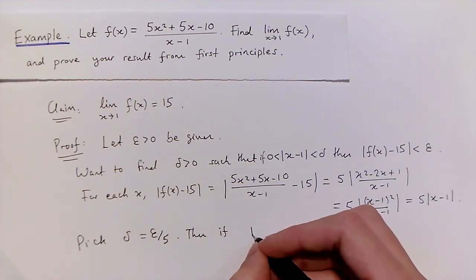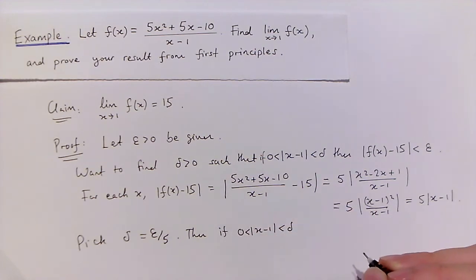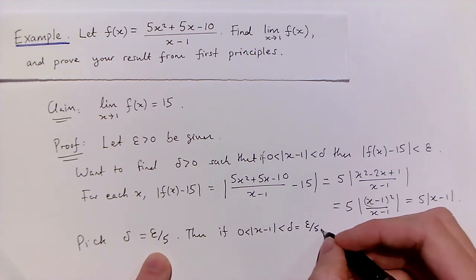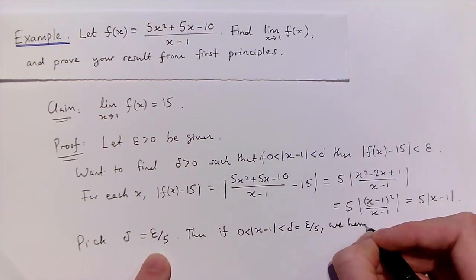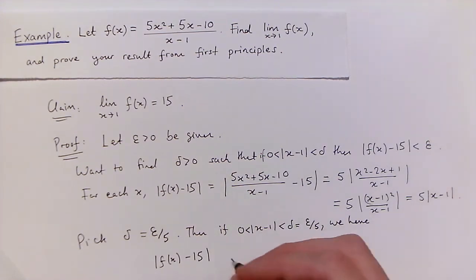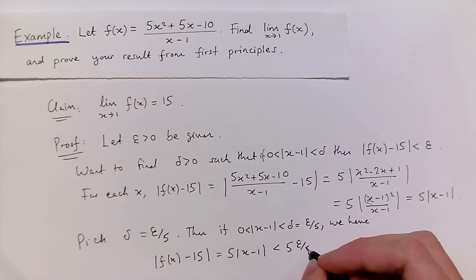Then, if x is within delta of 1 and not equal to 1 itself, well, if delta is epsilon over 5 by our choice, we then have that the distance between f(x) and 15, which remember we've just shown is equal to 5 times the distance between x and 1. Well, by our assumption, this is going to be less than 5 times delta, which is just epsilon over 5.